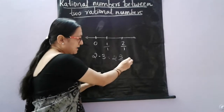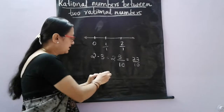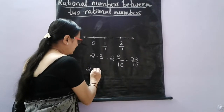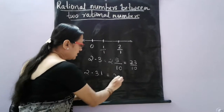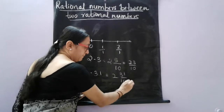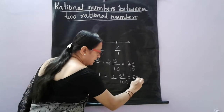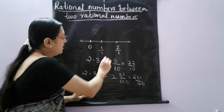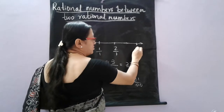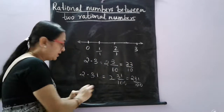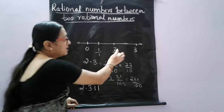This can be written as 20 plus 3, that is 23 by 10. Similarly, if I say 2.31, how can we represent it? This is nothing but 2 integer 31 by 100, which is again 231 by 100. It means that both numbers — 2.3 and 2.31 — are lying between 2 and 3. If I say 2.311, again it is between these two numbers.